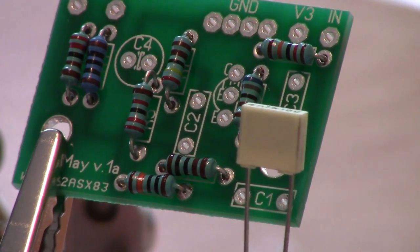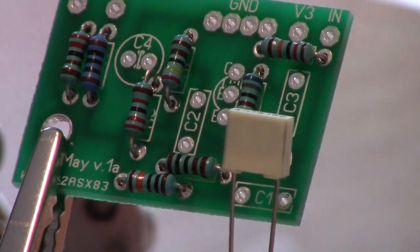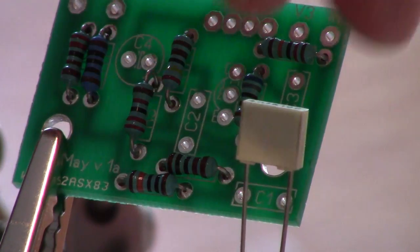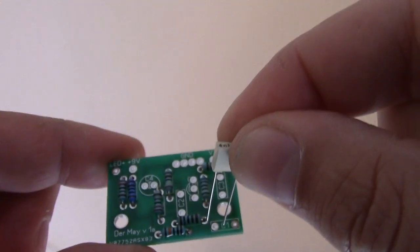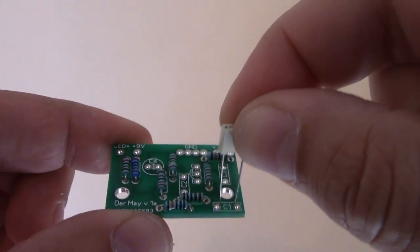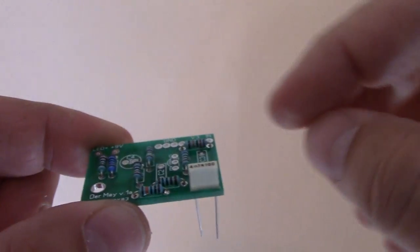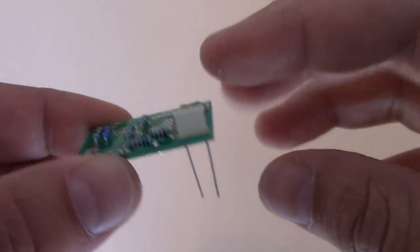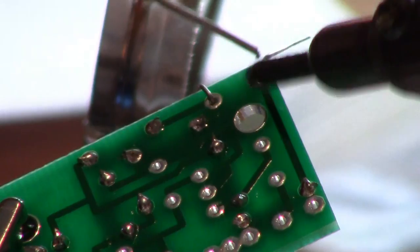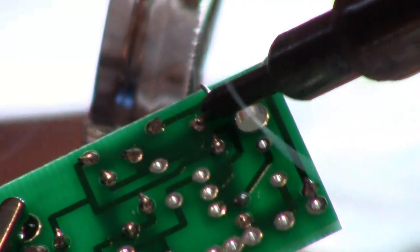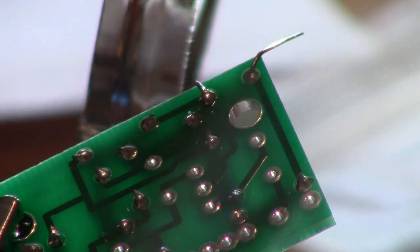Like the resistors, the film capacitors are non-directional, so it does not matter which way they are installed. Installing the film capacitors is similar to that of the resistors. Insert them from the imprinted side of the board and solder them on from the other side. Do this for the other two film capacitors.